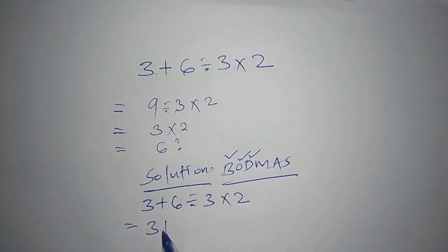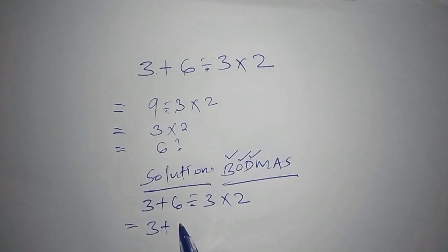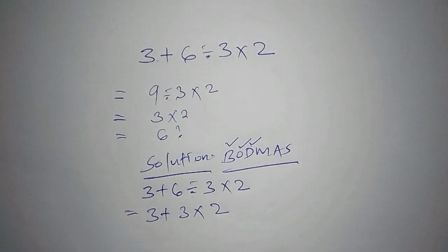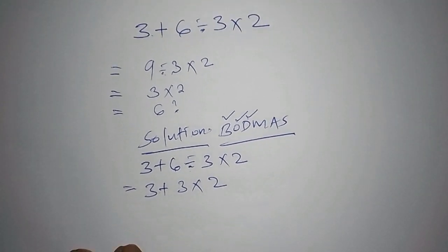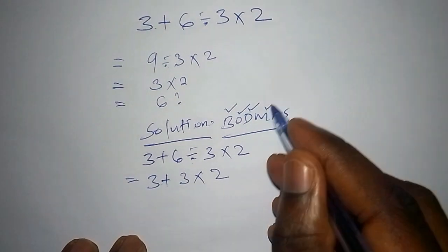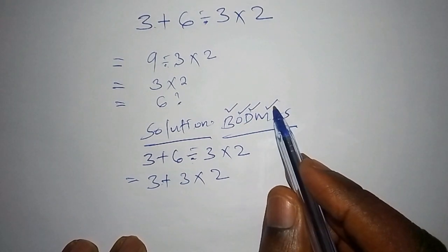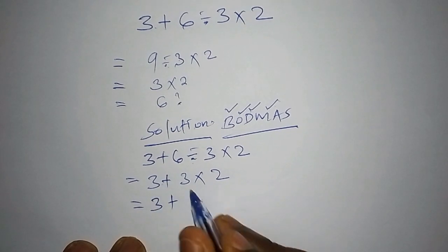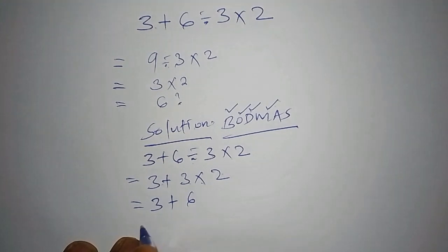We have the division, so we take 6 divide by 3, which gives us 2. Then we multiply by 2. After reaching this, what we're going to do is move to the next step, that is multiplication. We say 3 plus 2 multiply by 2, we shall get 4. In the last method, we shall have 3 add to 4, and the answer is 7.